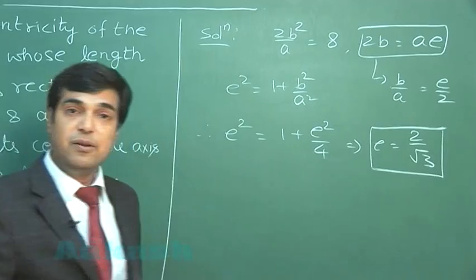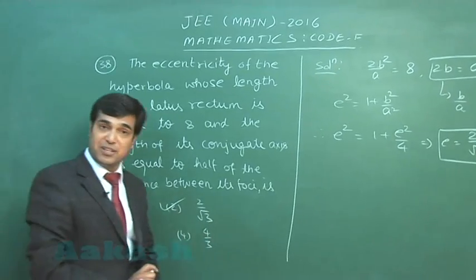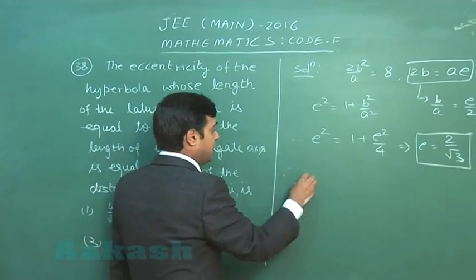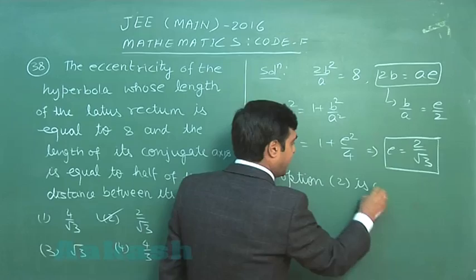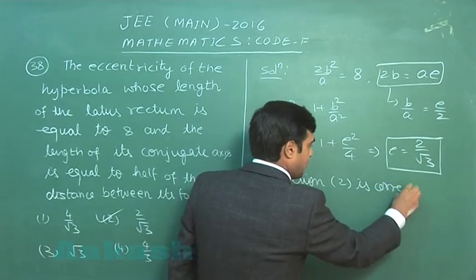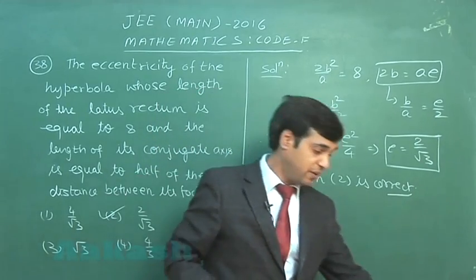So in this fashion, we get the value for eccentricity direct as 2/√3. So this point is clear? So we can write here, therefore option 2 is correct. So let us move to the next one, that is question number 39.